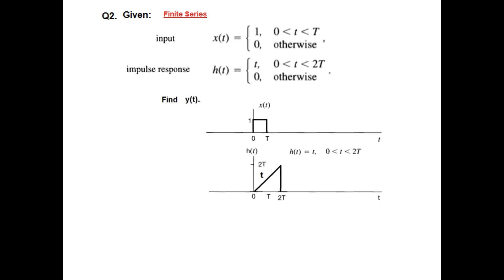So Xt has a value of 1 from 0 to t. From 0 to t, it has a value capital T. It has a value of 1.